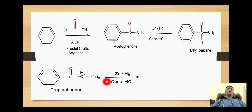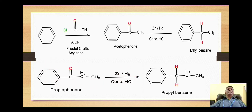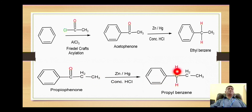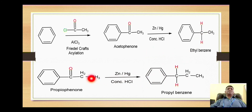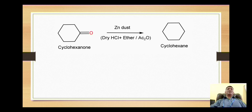Another example: propiophenone on reaction with zinc amalgam and concentrated hydrochloric acid will give formation of n-propylbenzene. Here also we can view that the doubly-bonded oxygen is replaced with two single bonds containing the hydrogens. In all cases, hydrogens are attached — that is why the reaction is called a reduction reaction.